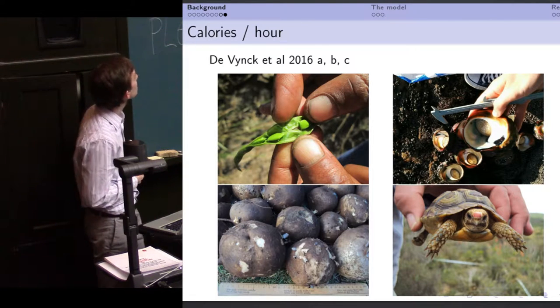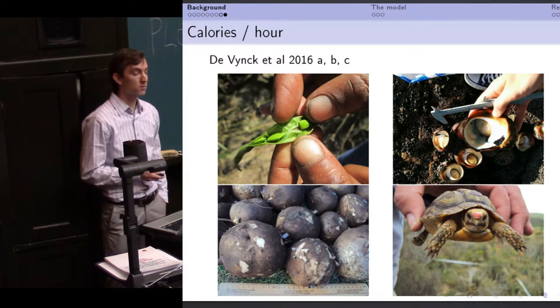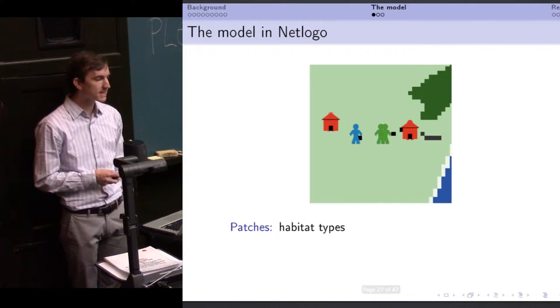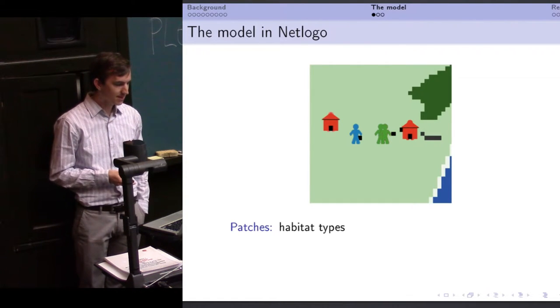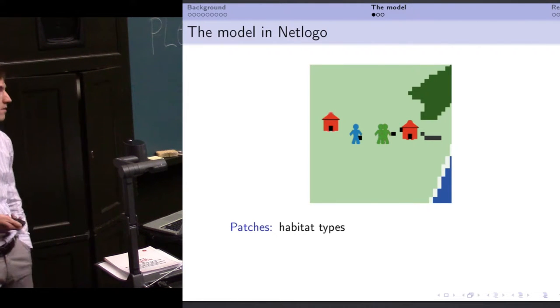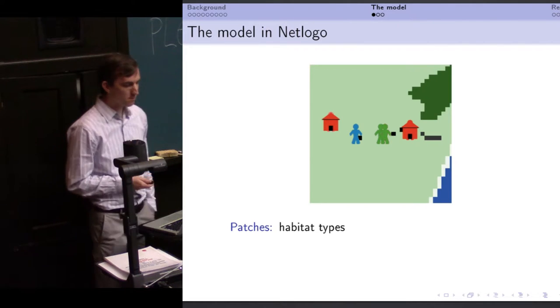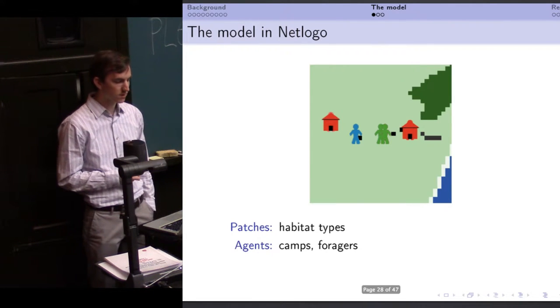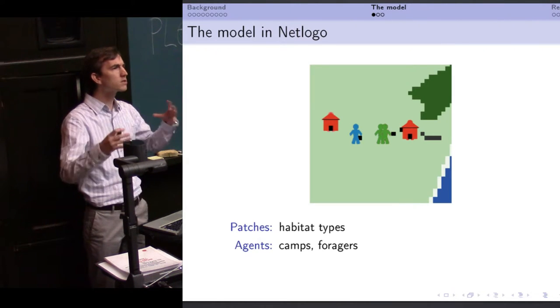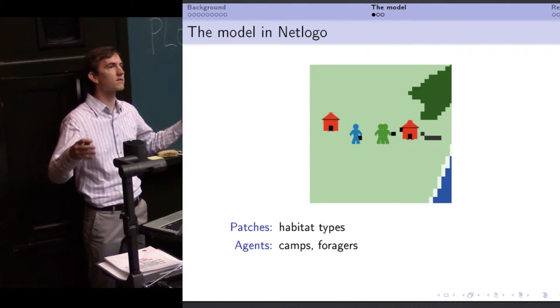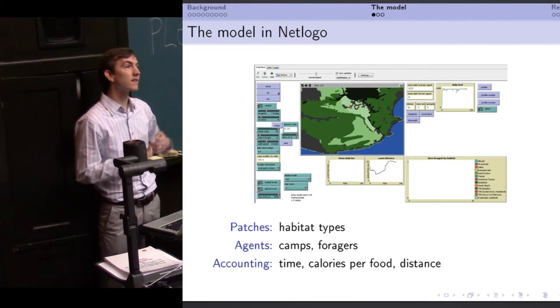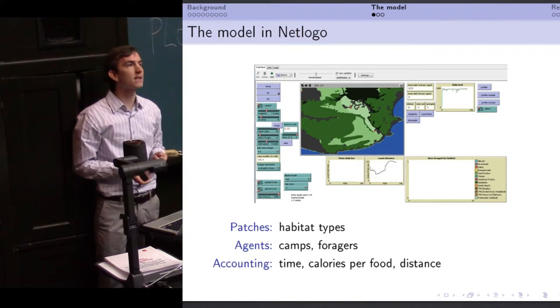Jan de Vink et al have published three papers in the last couple of months, summarizing all of this data that I will be extracting. All right. So the model itself is built in NetLogo, of course, being the NetLogo evangelist that I am. The habitat types out of that map that you saw a minute ago have been classified down into different patches, more or less representing the different caloric returns that you can get from them. We have two different types of agents. We have camps that make most of the decisions and then little foragers set out from those harvesting resources and return.